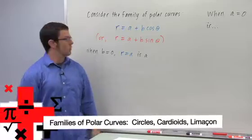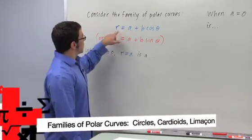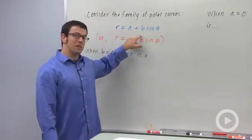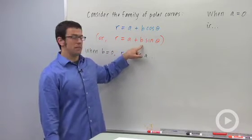I want to talk about a family of polar curves that's described by these two equations: r equals a plus b cosine theta, or r equals a plus b sine theta.